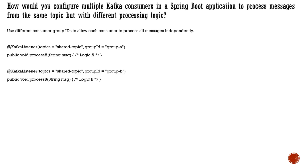How do you configure multiple Kafka consumers in a Spring Boot application where you want to process messages from the same topic but with different processing logic? We can use the concept of consumer group IDs. This allows each consumer to process all messages independently. You can have the same topic shared across consumers, with different group IDs, so each group can have its own separate implementation and logic.